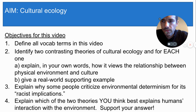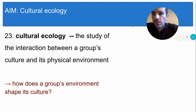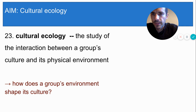Look these questions over and get ready to copy some vocab and take some notes. Today we're going to look at the last theme of human geography: interaction, which means interaction between humans and their environment. Another word for that is cultural ecology. Cultural ecology is the study of the interaction between a group's culture and its physical environment.